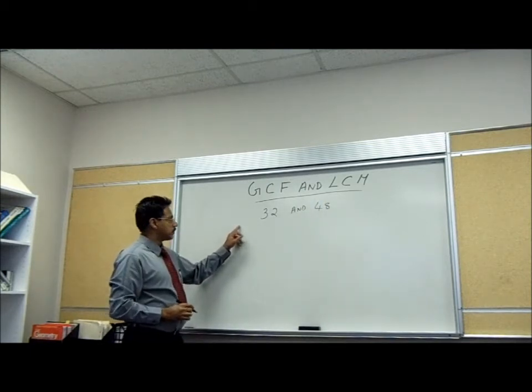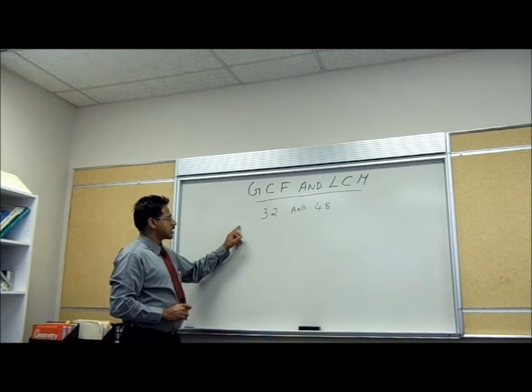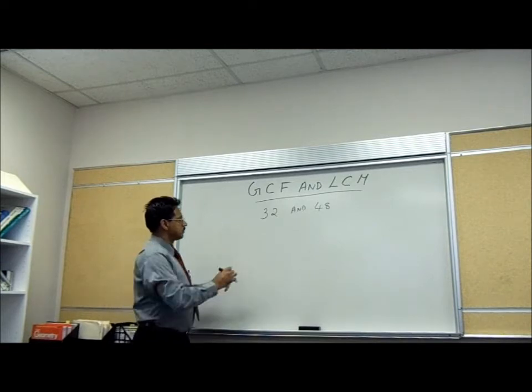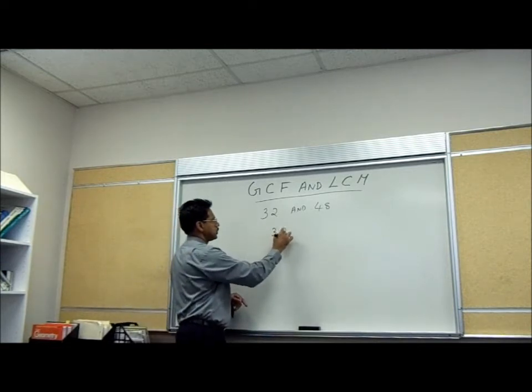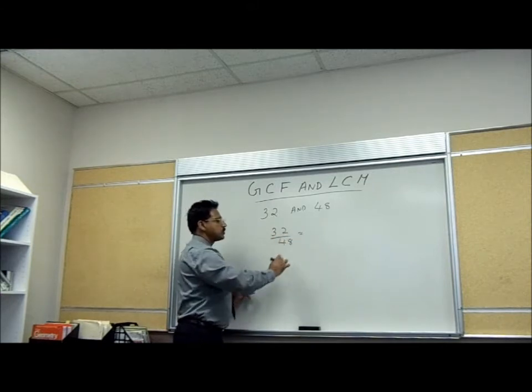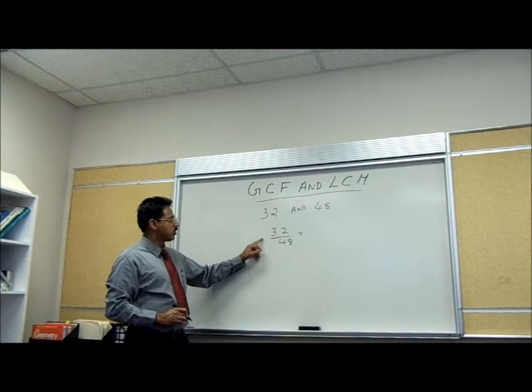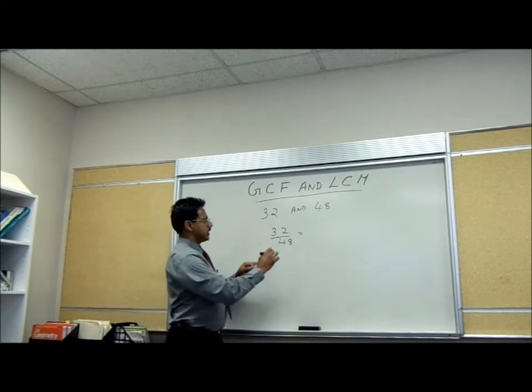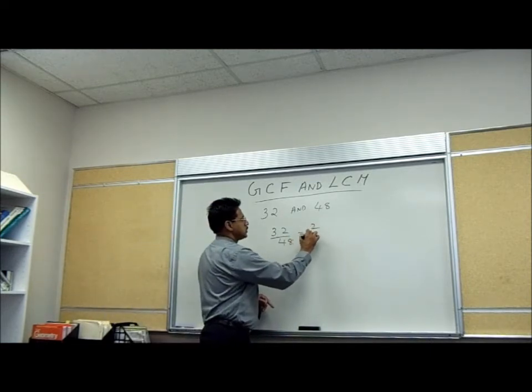The first step, try to make a fraction with those two numbers, 32 over 48. And reduce that fraction to the lowest terms, which gives 2 over 3.